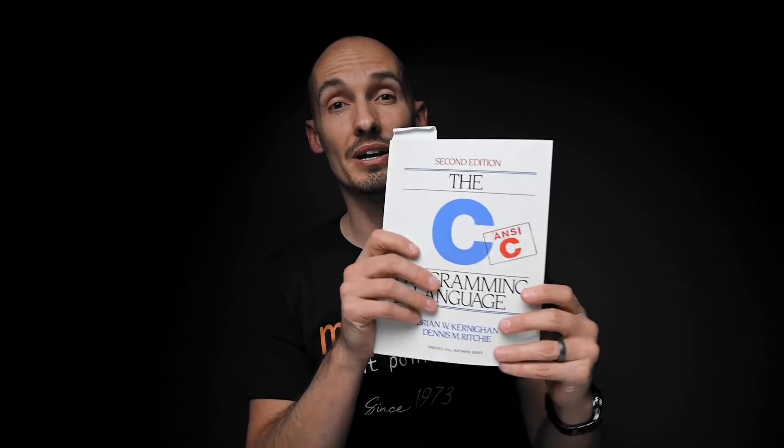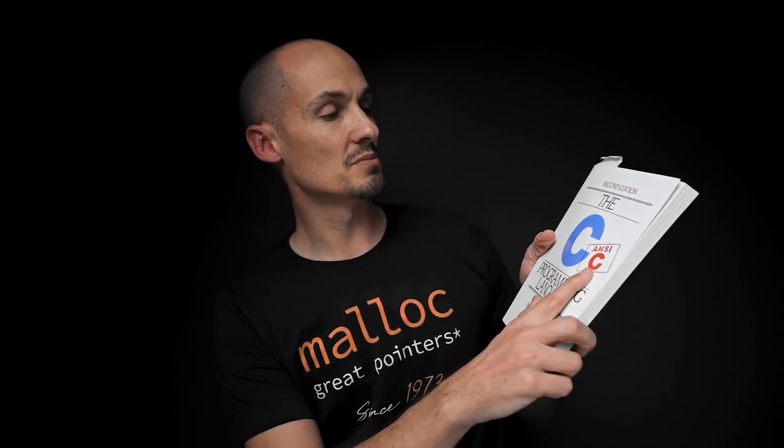C was born in the 70s, and during the 70s and 80s there wasn't really a formal specification for the language. The closest thing we had was this book right here — Kernighan and Ritchie, or K&R. It's still a great book and I definitely recommend it.